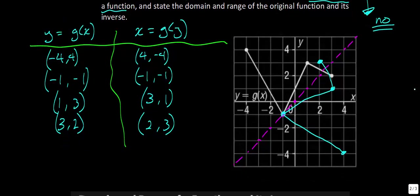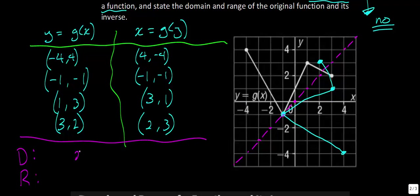Finally, we need to state the domain and range. For my original function right here, the x values went from negative 4 to about 3. So we'd say x must be between −4 and 3, inclusive. For y, our biggest value was 4 and it went to −1. So y must be less than or equal to 4 and greater than or equal to −1.